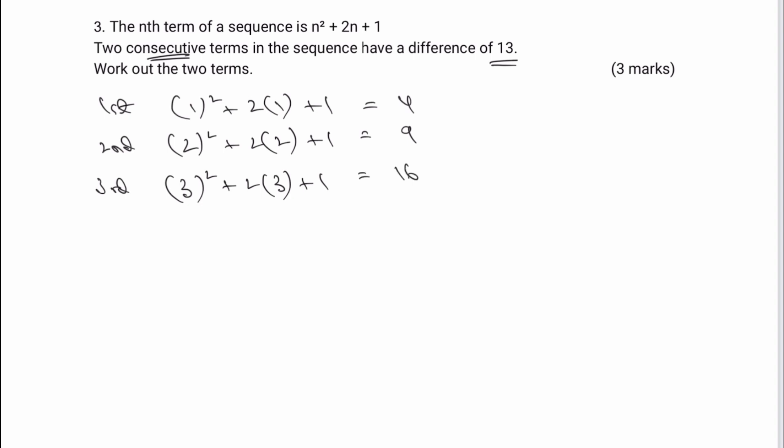So the third term is going to be 16. The fourth term, that's going to be 4 squared plus 2 times 4 plus 1. And when I work all of that out, I get 25.